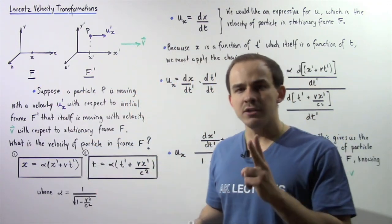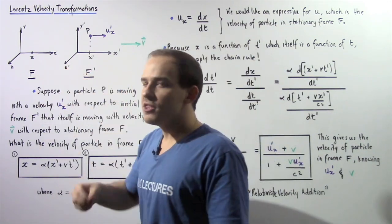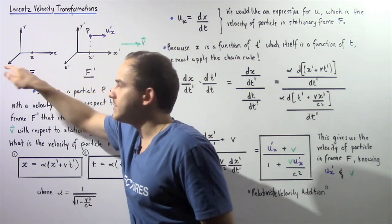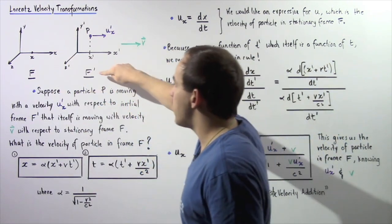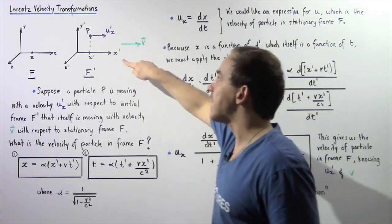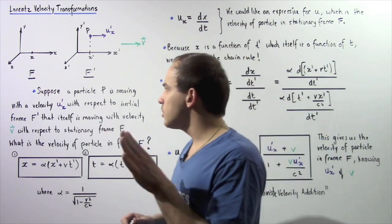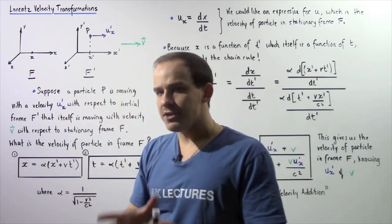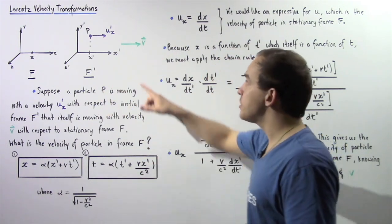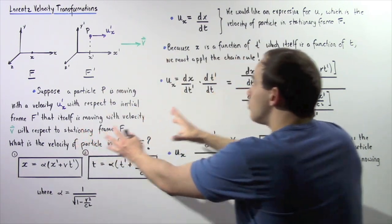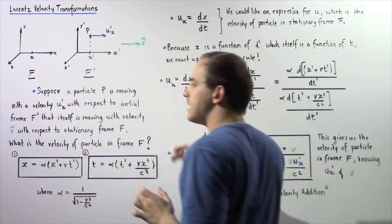Let's suppose we have two inertial reference frames. We have a reference frame F that consists of axes x, y, and z. We also have a reference frame F' that consists of axes x', y', and z'. Let's suppose that inertial reference frame F is stationary, while inertial reference frame F' is moving with velocity v to the right along the x-axis with respect to frame F.